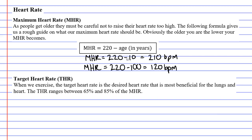So if either of these people go above their maximum heart rate, that's when they're putting their life in danger. Now, we also have something called a target heart rate. When we are exercising, the target heart rate is the desired heart rate most beneficial for our lungs and heart — basically between 65% and 85% of our maximum heart rate. Let's say someone's maximum heart rate is 200 beats per minute, meaning they must be 20 years old.